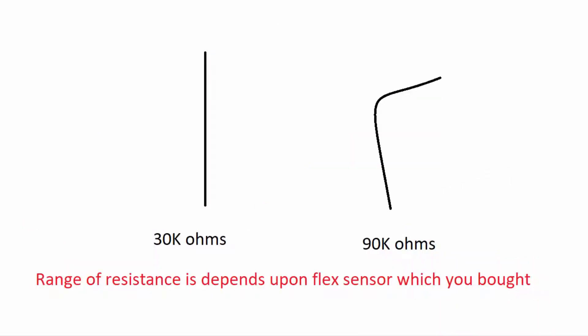Flex sensor changes its resistance when it bends. In normal flat position, its resistance is 30K ohms, and when it is bent, its resistance increases up to 90K ohms.